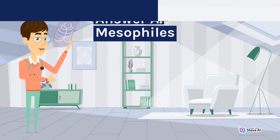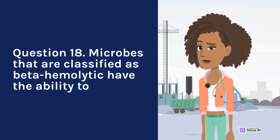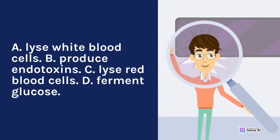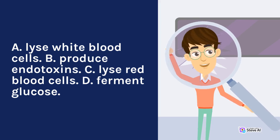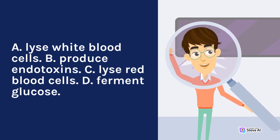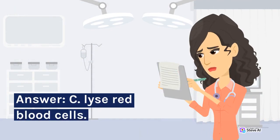Question 18. Microbes that are classified as beta-hemolytic have the ability to: A. Lyse white blood cells. B. Produce endotoxins. C. Lyse red blood cells. D. Ferment glucose. Answer: C. Lyse red blood cells.